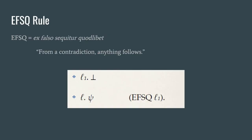The next rule is EFSQ. EFSQ stands for ex falso sequitur quodlibet. What that means is from a contradiction anything follows. So the rule can be simply pictured: if you have falsum on a line ℓ₁ then you can write ψ on a new line and the rule being used here is EFSQ on line ℓ₁.